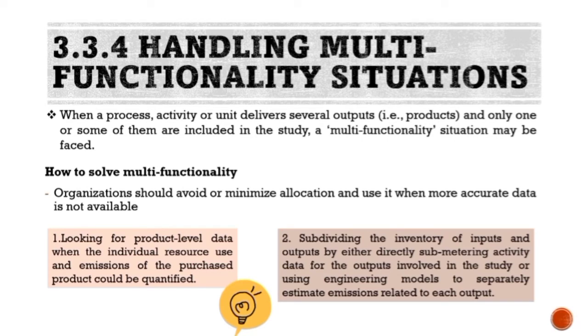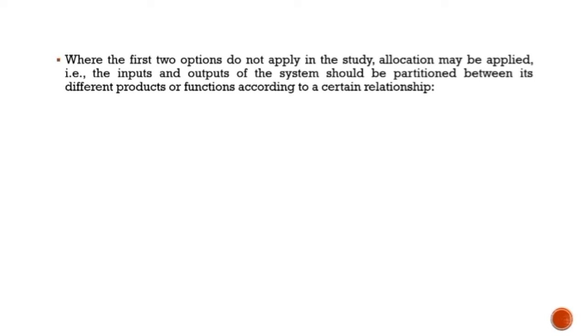Second, subdividing the inventory of inputs and outputs by either directly submetering activity data for the outputs involved in the study or using engineering models to separately estimate emissions related to each output. Where the first two options do not apply in the study, allocation may be applied, that is, the inputs and outputs of the system should be partitioned between its different products or functions according to a certain relationship.